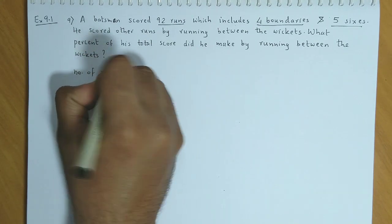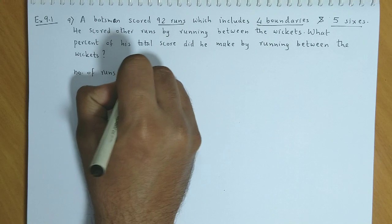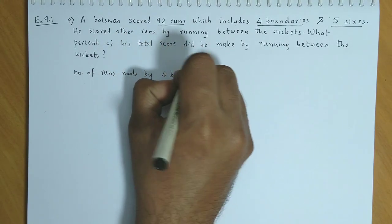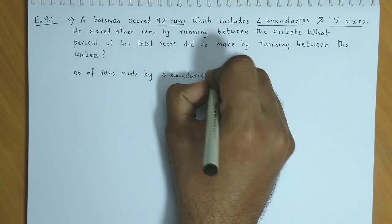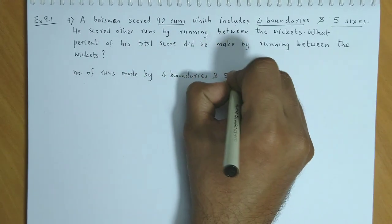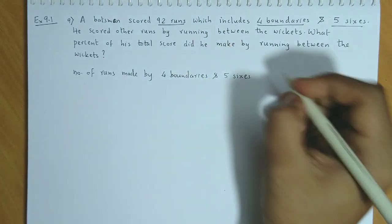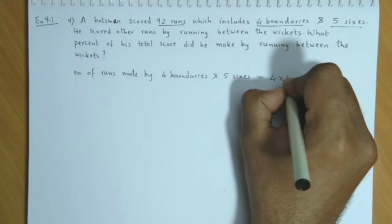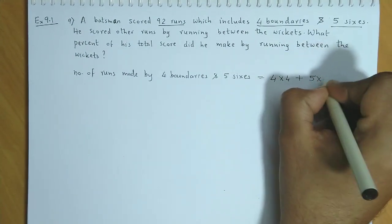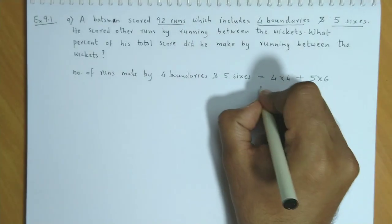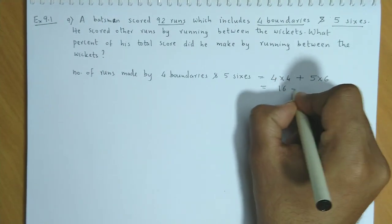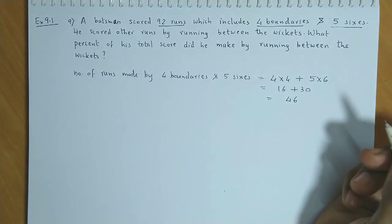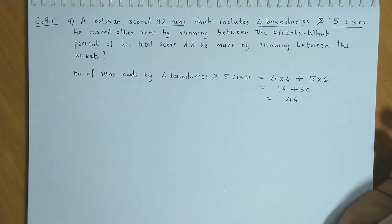The number of runs made by 4 boundaries and 5 sixes: boundaries give 4 runs each, so 4 into 4, plus 5 sixes, so 5 into 6. This is 16 plus 30, which is 46. So 46 runs were scored by boundaries and sixes.